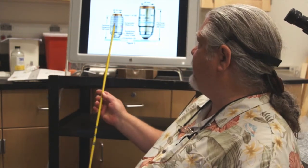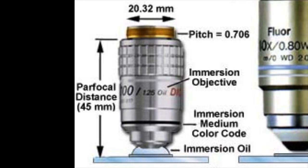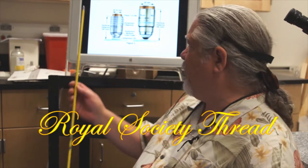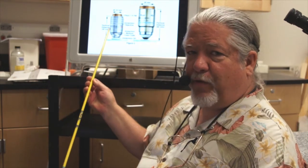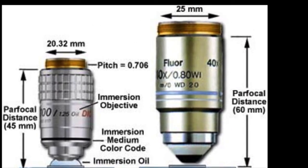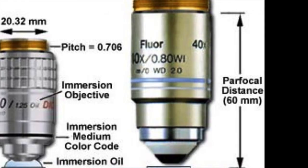There are other things important about interchangeability of objectives from microscope to microscope. Here you see two different size objectives. One is an old-style fixed tube length or 160-millimeter tube length objective with a smaller thread. This has a 20.32-millimeter thread, called the Royal Society thread. For about 150 years, most microscopes employed this kind of objective. Manufacturers have changed and gone to bigger objectives with a larger thread. You cannot interchange a lot of objectives from older microscopes onto newer ones. Notice also the barrel length is much larger.